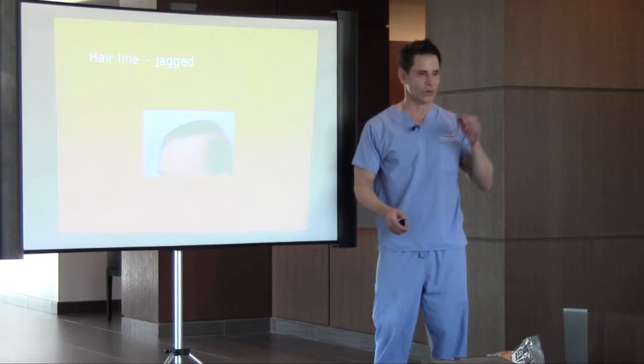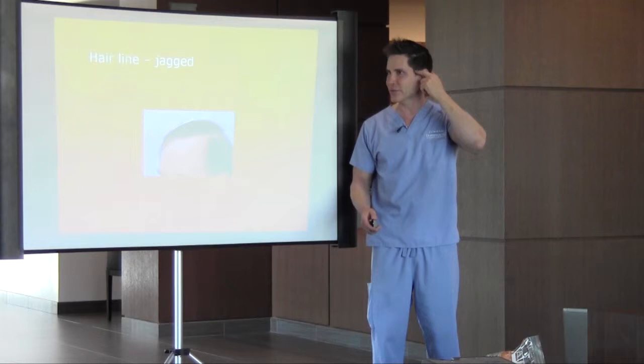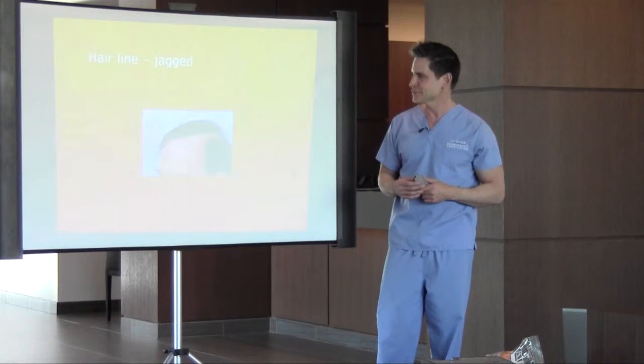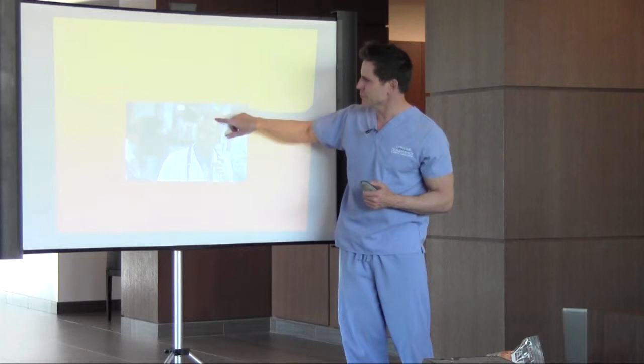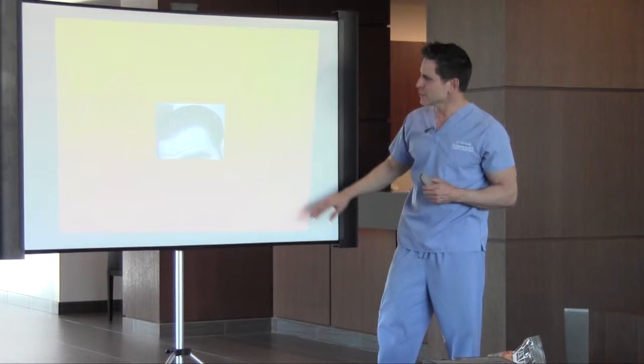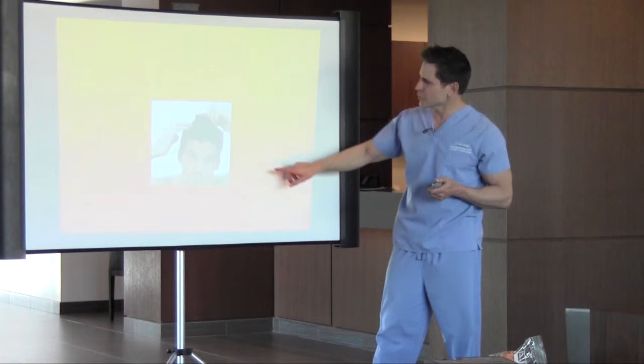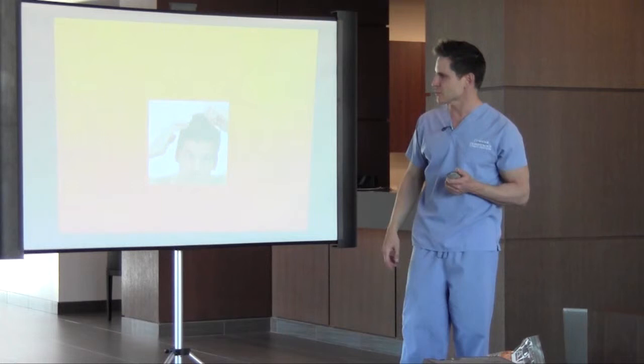To fix that unnatural hairline, we could go back and place single jagged hairs along the front for a much more natural result. Another important element is the temporal tuft — filling that in gives a much more natural appearance, because most young people have a slight forward projection of the hairline extending out to a peak. As you age that recedes, contributing to an aged look. This patient here has a nice temporal tuft and a little recession with fullness throughout.